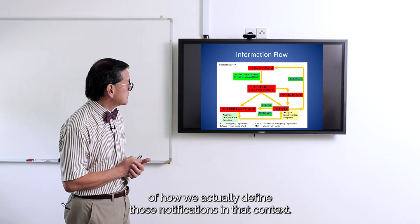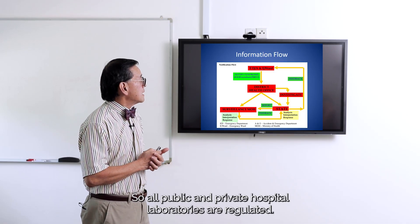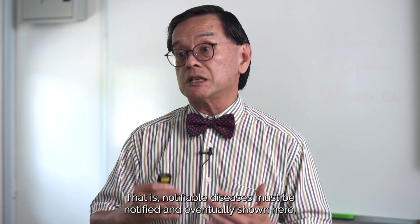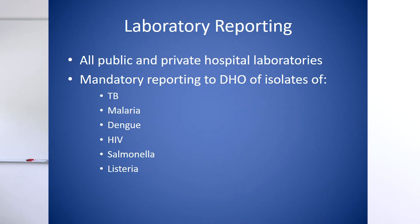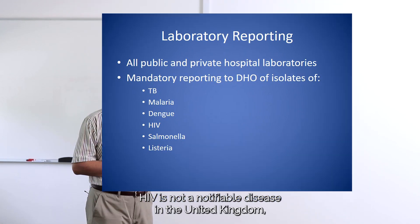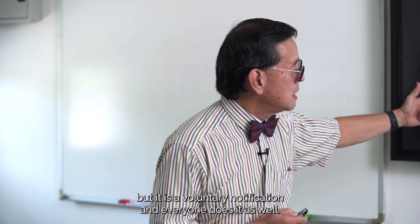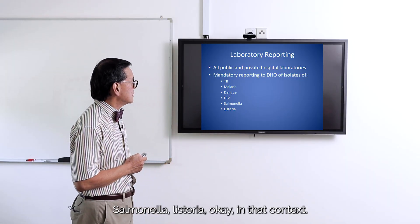All public and private hospital laboratories are regulated such that notifiable diseases must be reported. Notifiable isolates include TB, malaria, dengue, and HIV. HIV is not a notifiable disease in the United Kingdom but is done through voluntary notification, and compliance is very high. Salmonella and Listeria are also notifiable in this context.